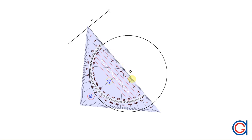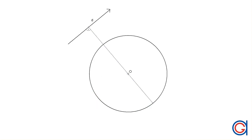And this line cuts the circumference of the circle at two points, which are the tangent points t1 and t2, and this satisfies the aforementioned principle.